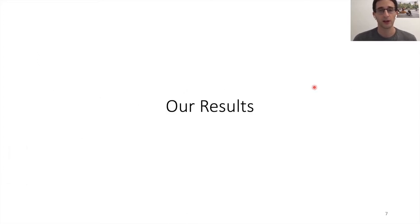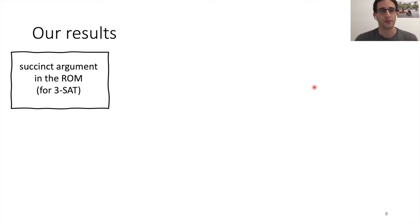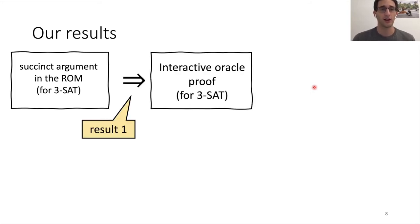So now let me state our results. So first we show that you can take any succinct argument in the random oracle model, and you can distill from it an interactive oracle proof, an IOP. This is our first result. Moreover, the parameters of this IOP are going to be very closely related to the parameters of the succinct argument.